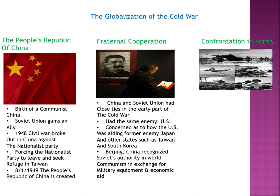China and the Soviet Union had close ties in the early part of the Cold War — they were strong allies with the same enemy: the U.S. and democracy. They were concerned about the U.S. aiding former enemy Japan and other states such as Taiwan and South Korea. They felt these remained the enemy. Beijing recognized Soviet authority and world communism in exchange for military equipment and economic aid — we will recognize you as the main communist authority if you help us out.